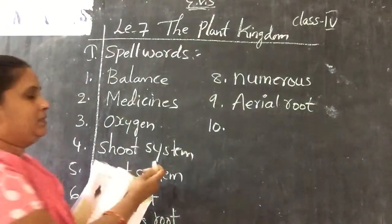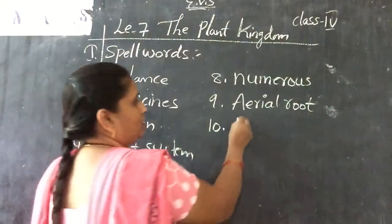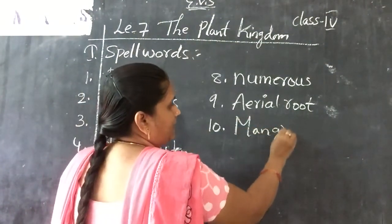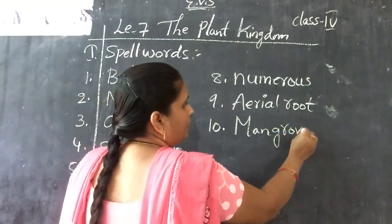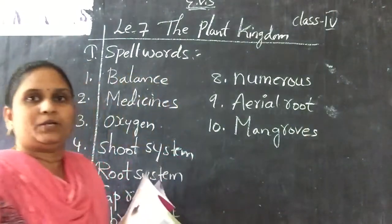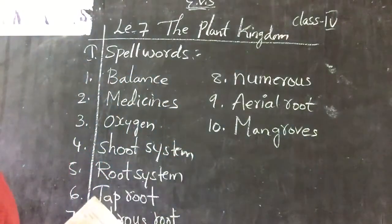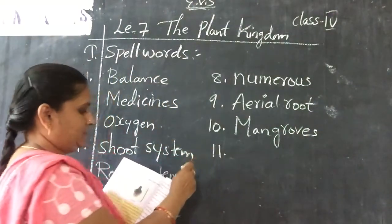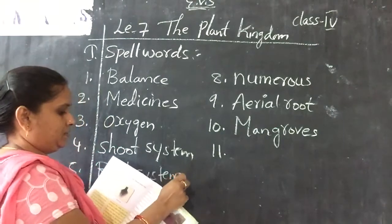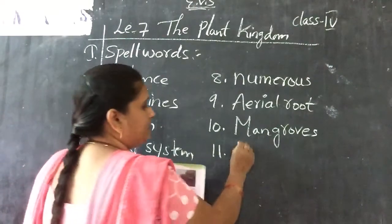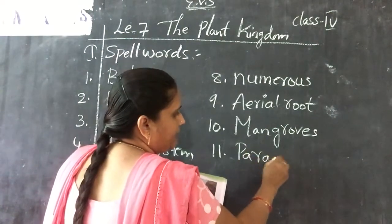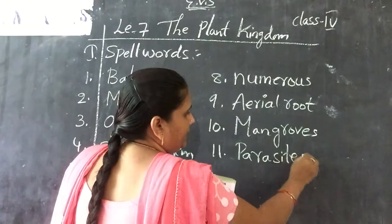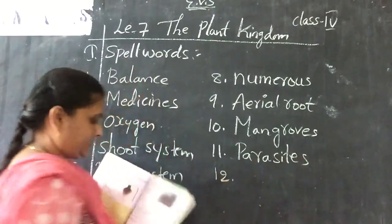Tenth one: mangroves — M-E-A-N-G-R-O-V-E-S — mangroves. Eleventh one: parasites — P-A-R-A-S-I-T-E-S — parasites.